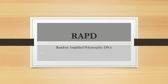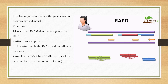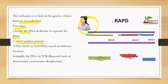The third technique is RAPD — Random Amplified Polymorphic DNA. This technique is used to find out the genetic relationship between two individuals. The procedure involves first isolating the DNA, then denaturing it to separate the strands. Random primers are then attached; these random primers attach to both DNA strands at different locations.